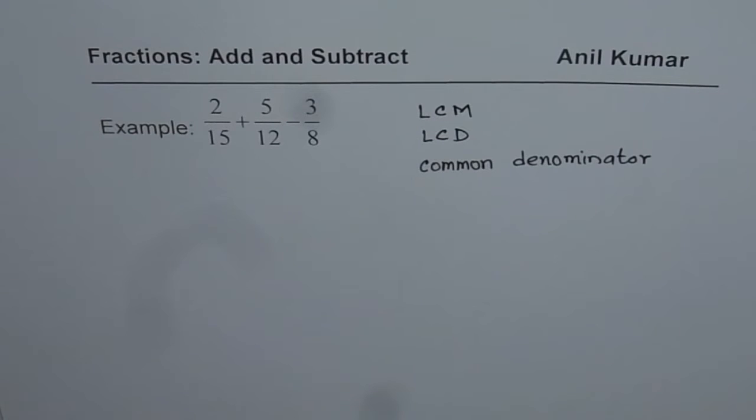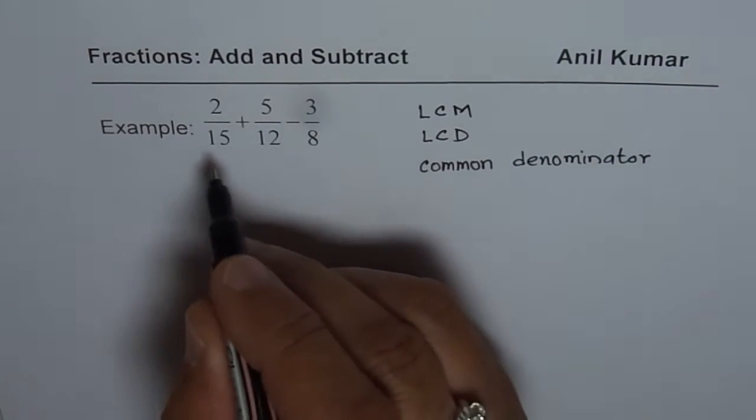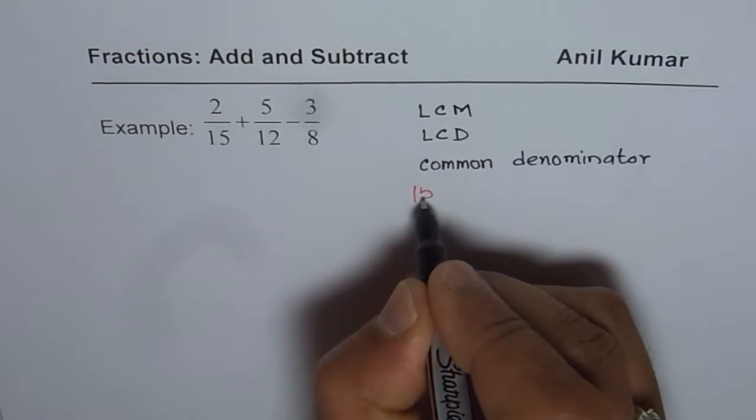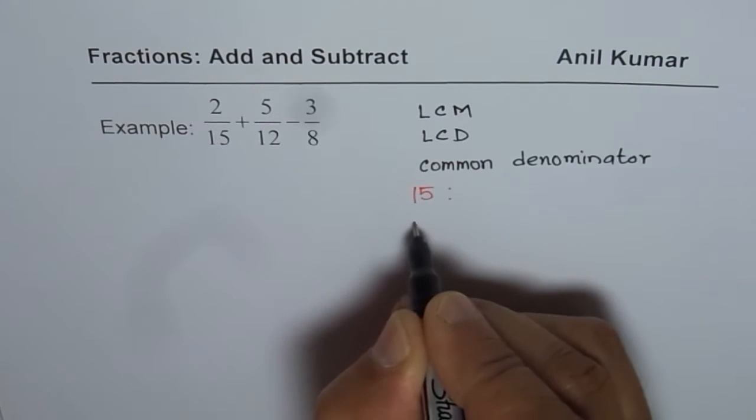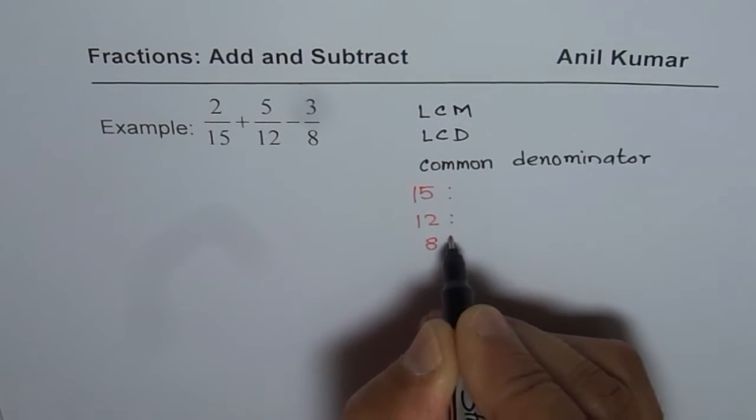There are two different methods. One is we can write down their multiples and then figure out which one is the least common. Let me begin by showing you the first method which is writing down multiples. So, multiples of 15, multiples of 12, multiples of 8.